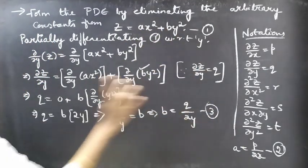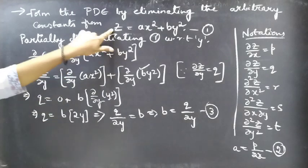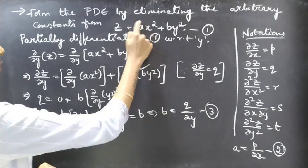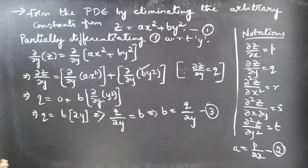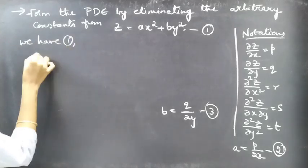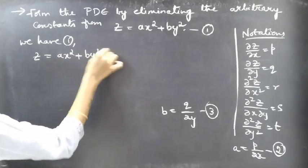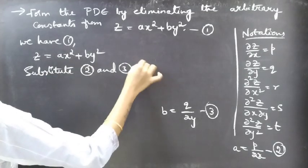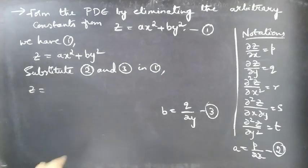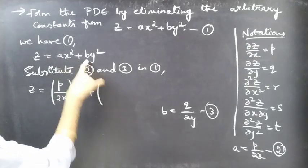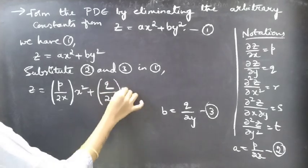We now have equations 1, 2, and 3. By partially differentiating equation 1 with respect to x we got equation 2, and by partially differentiating with respect to y we got equation 3. Observing equations 1, 2, and 3, we can see that by substituting 2 and 3 into 1, the arbitrary constants a and b get eliminated. So let's substitute: z = ax² + by², and replace a using equation 2 with p/2x.